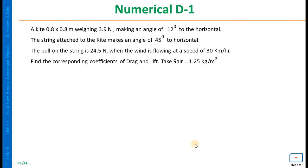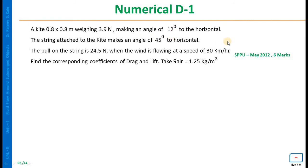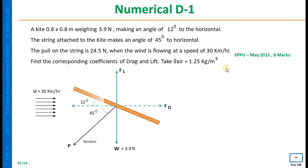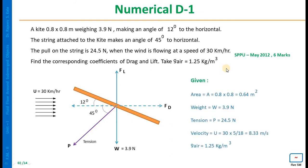We will now solve a numerical from a University Examination, May 2012, worth 6 marks. A kite 0.8 m × 0.8 m weighing 3.9 N makes an angle of 12 degrees to the horizontal. The string attached to the kite makes an angle of 45 degrees to the horizontal, and the pull on the string is 24.5 N. Wind is flowing at a speed of 30 km per hour. Find the corresponding coefficients of drag and lift. Take density of air as 1.25 kg/m³. Draw a neat sketch of the kite showing all parameters.